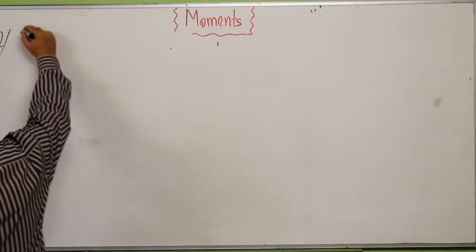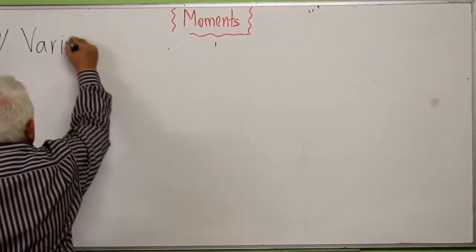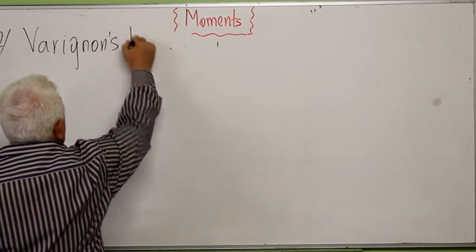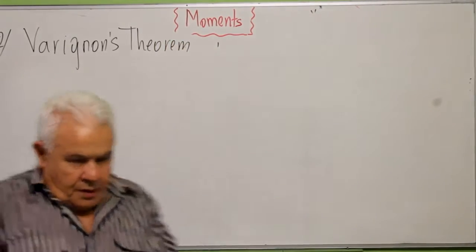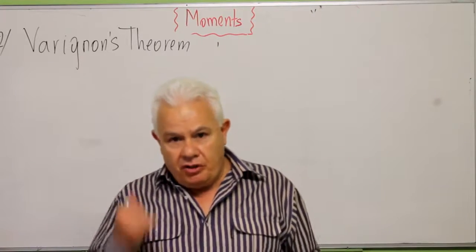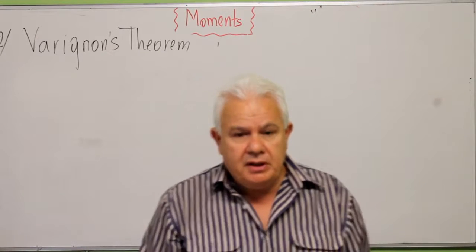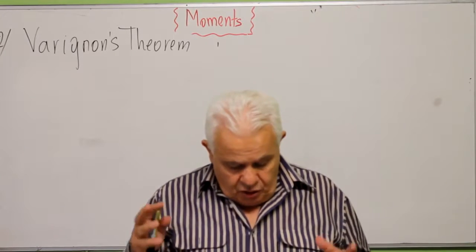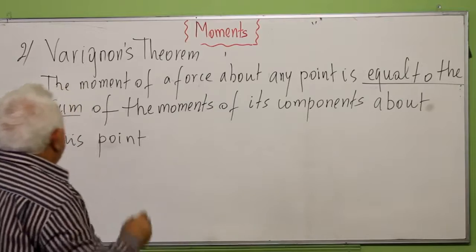Varignon's theorem is named after the guy who found this theorem. This method — the principle of calculation of the moment — is the following: the moment of a force about a point is equal to the sum of the moments of its components about that point. So this is Varignon's theorem.